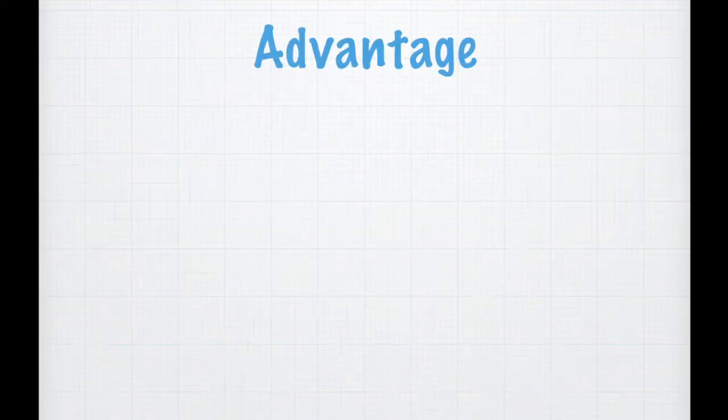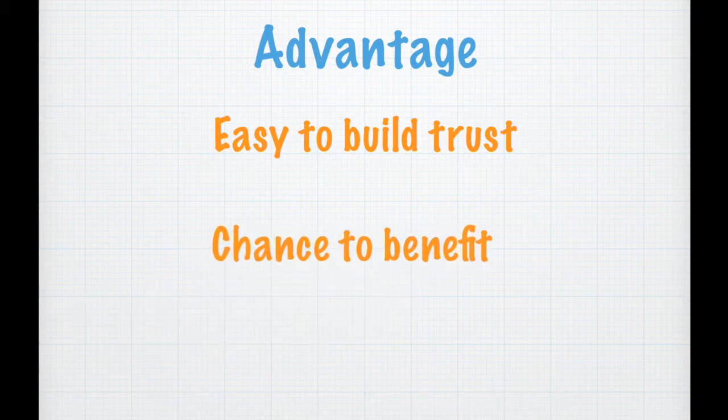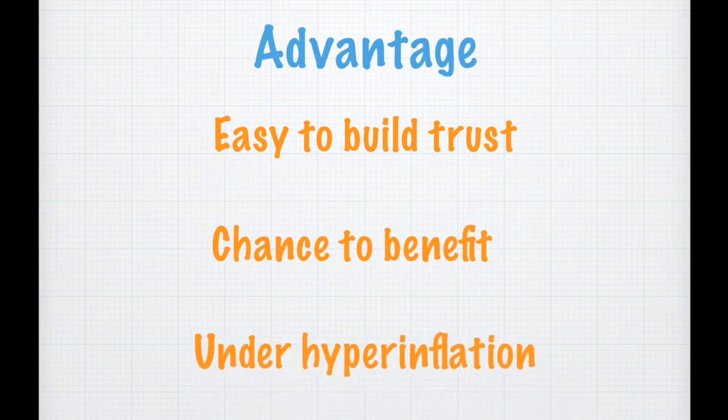So what is barter? Barter system exchanges goods when both sides lack trust in each other and don't accept money. One gets benefit if the partner has higher estimation on the value of goods. And well, money divides quickly, but real goods are more reliable.